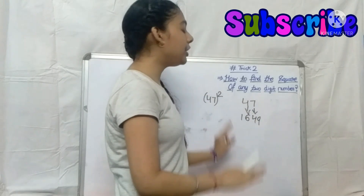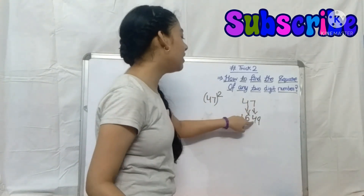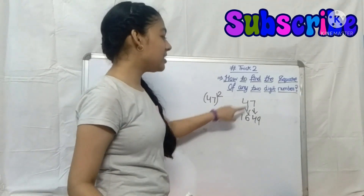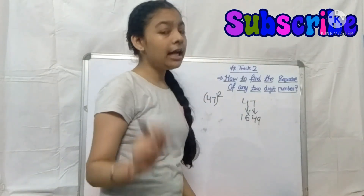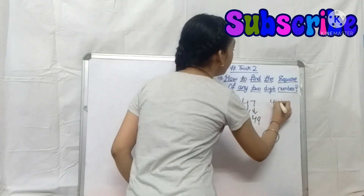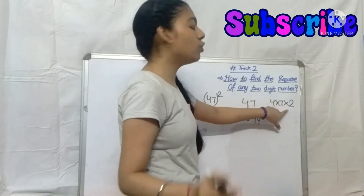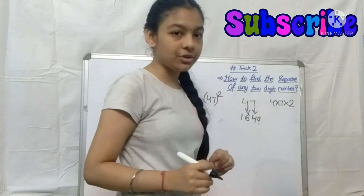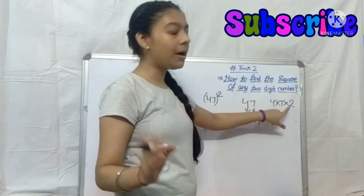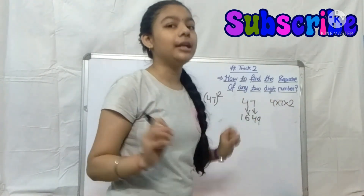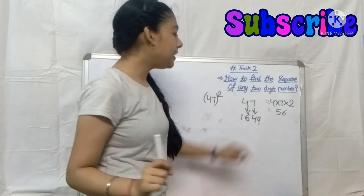Now the second step: we take our two digits 4 and 7 and multiply them together, then multiply by 2. So 4 into 7 into 2 equals 56. That is our result for the second step: 56.